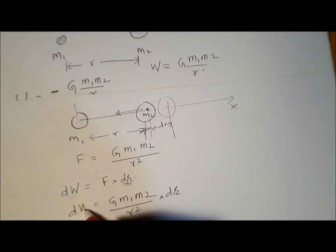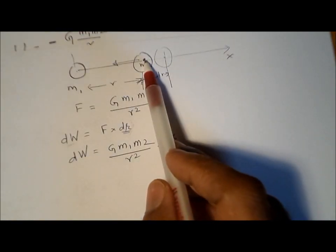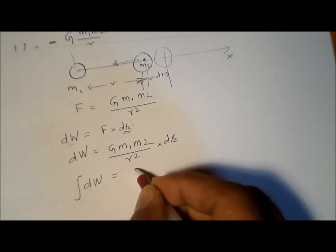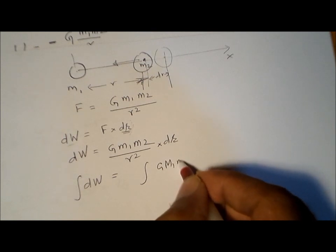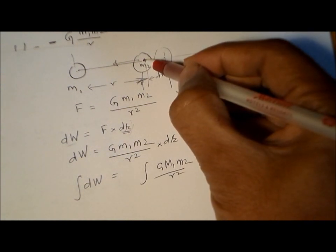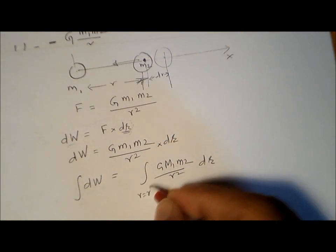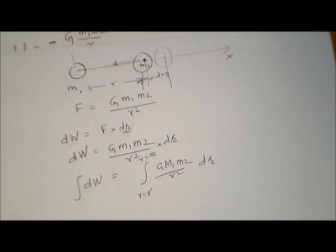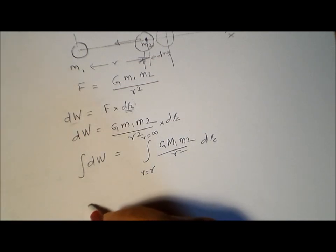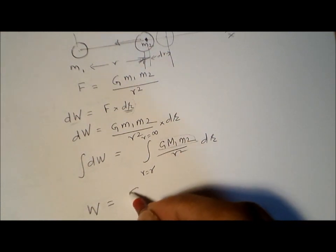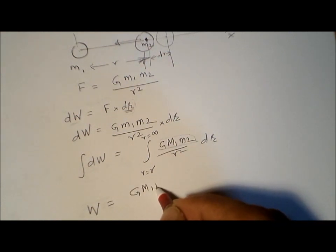We know that the force F is given by G m1 m2 divided by r squared, multiplied by dr. To find the total work done in taking this mass from here to infinity, we integrate this expression. The result is: W equals the integral of G m1 m2 divided by r squared dr. Since G m1 m2 is constant, it comes out of the integral.